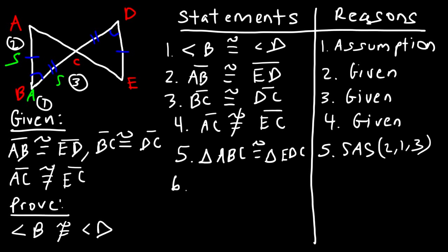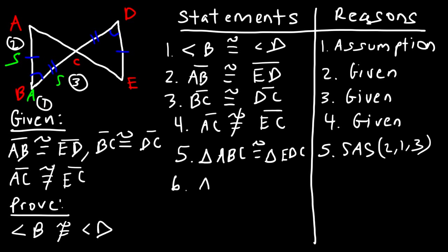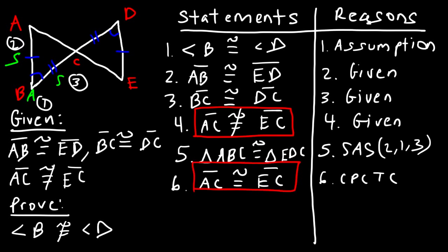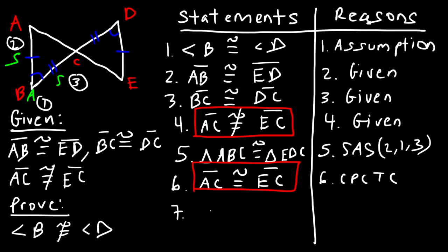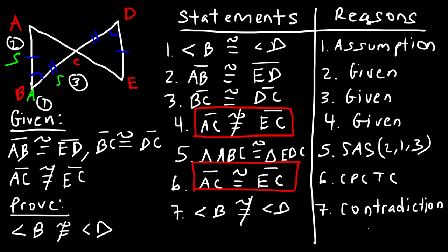For statement six, if the two triangles are congruent, then AC should be congruent to EC based on CPCTC. However, statements four and six clearly contradict each other — statement four says AC is not congruent to EC. Because there's a contradiction, the original assumption was false. Therefore, in statement seven, angle B is not congruent to angle D, with the reason being a contradiction of statements four and six.